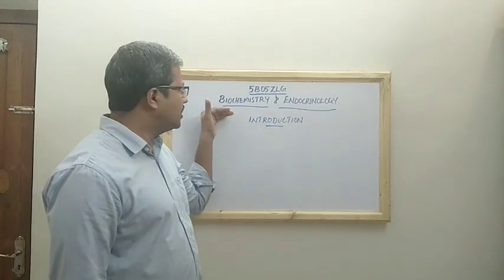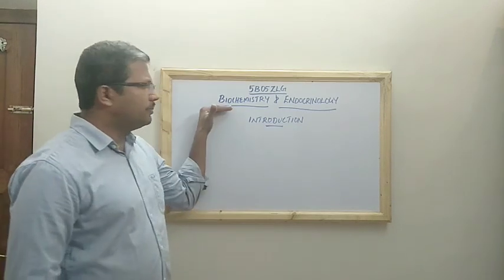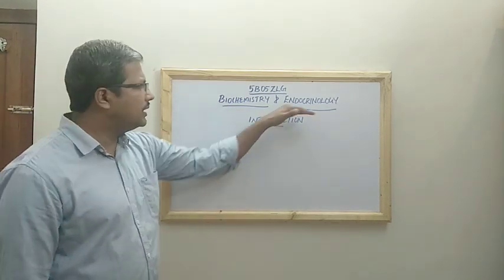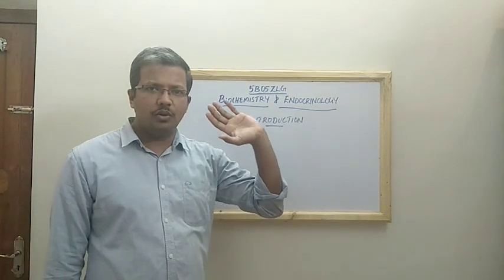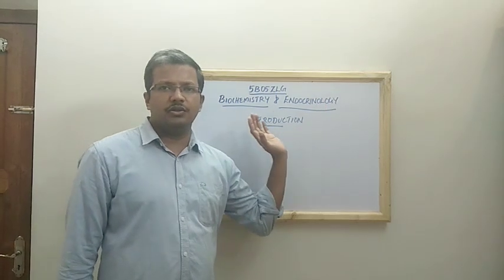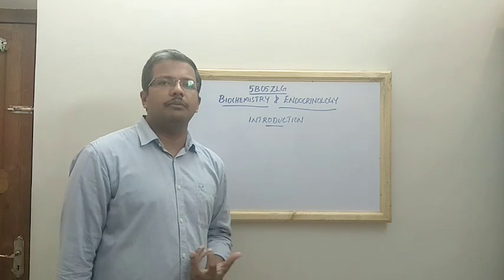In this paper we will be starting with biochemistry. This biochemistry paper has mainly 4 units, and endocrinology has only 1 unit which will be covering the entire hormonal physiology of organisms including human beings and other animals.